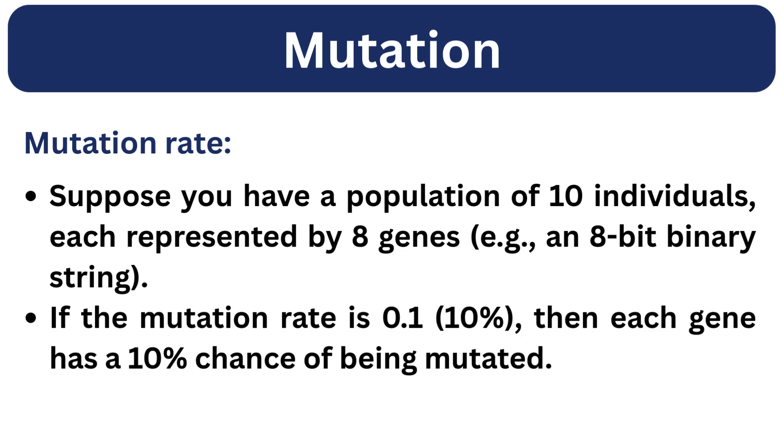Suppose you have a population of 10 individuals, each represented by 8 genes, for example an 8-bit binary string. If the mutation rate is 0.1, that is 10%, then each gene has a 10% chance of being mutated.